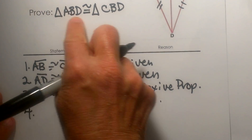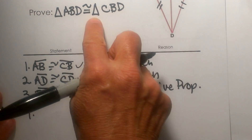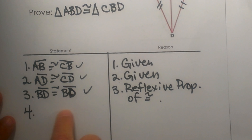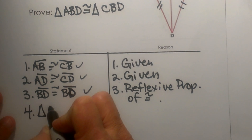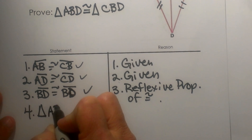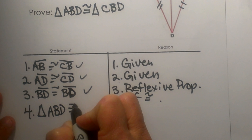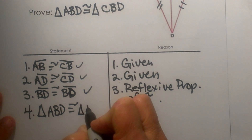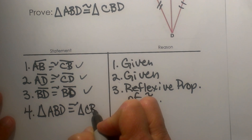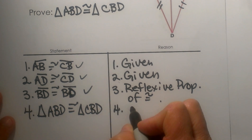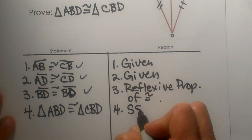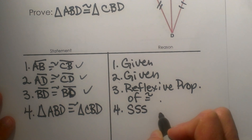So now we can write the prove statement as our last statement. Triangle ABD is congruent to triangle CBD, and the reason is because of the side-side-side postulate.